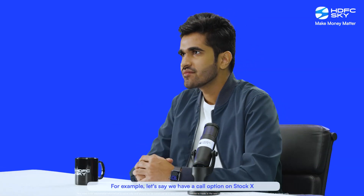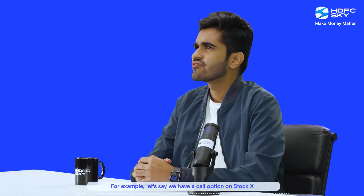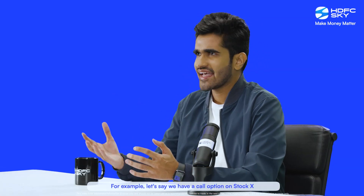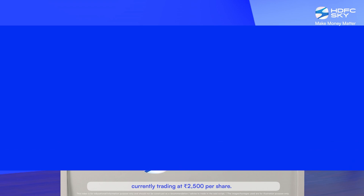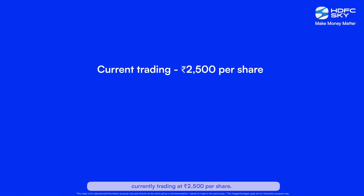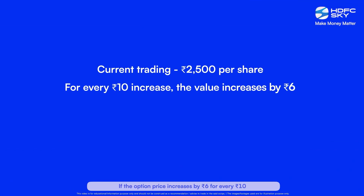For example, let's say we have a call option on stock X currently trading at ₹2500 per share. If the option price increases by ₹6 for every ₹10 increase in the stock price, the Delta is 0.6, which is 6 divided by 10.